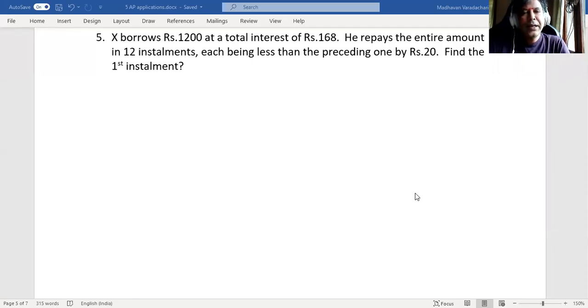Hello everyone, this is in continuation to application-related problems in arithmetic progression. The next question is question number five: X borrows Rs. 1200 at a total interest of Rs. 168. He repays the entire amount in 12 installments, each being less than the preceding one by Rs. 20. Find the first installment.